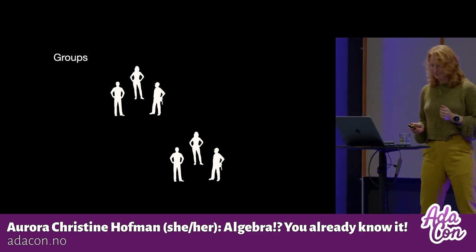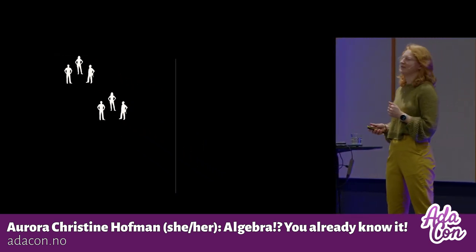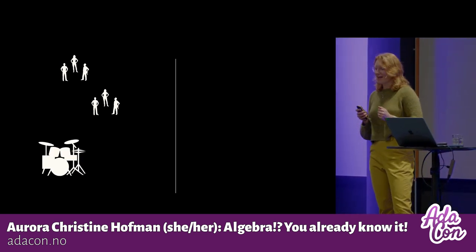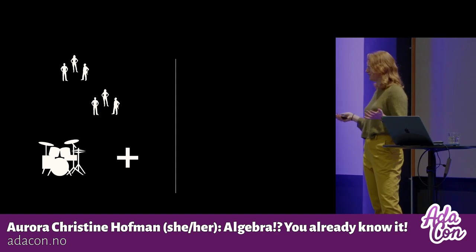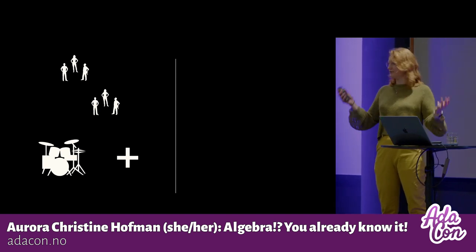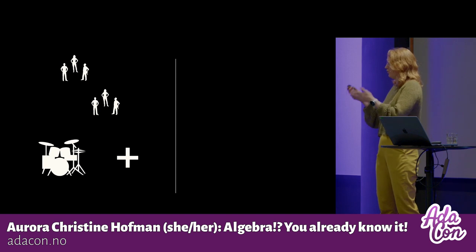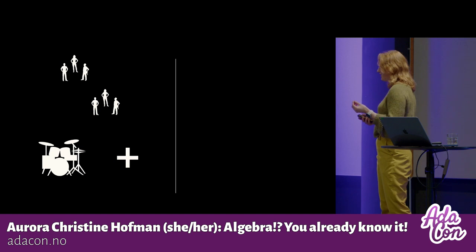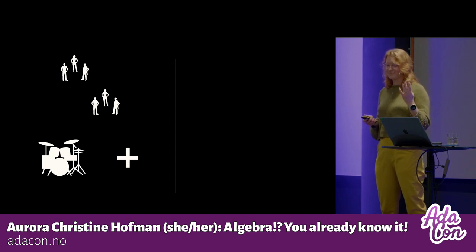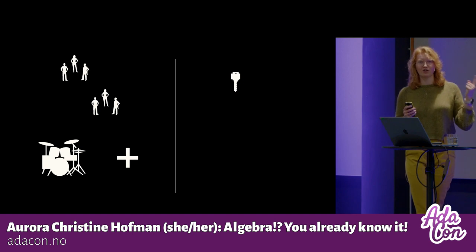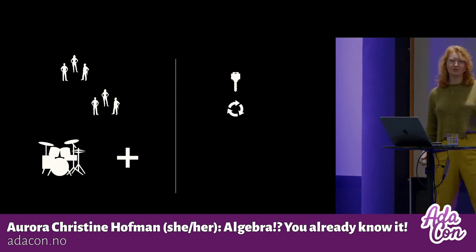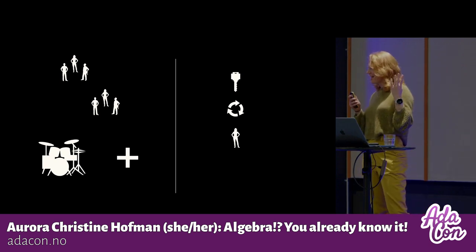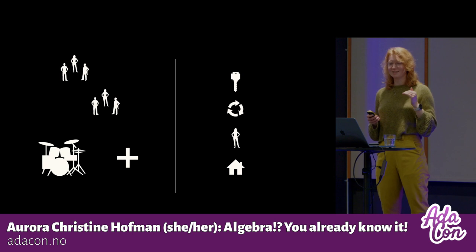Okay. So what is a group? A group consists of a set and an operation. An operation is basically just a function. So we need a space where we do things, and we need to know what we want to do. And this set and this operation together has to fulfill four rules. Now, these rules are called closure, associativity, identity element, and an inverse. I will go through them step by step.